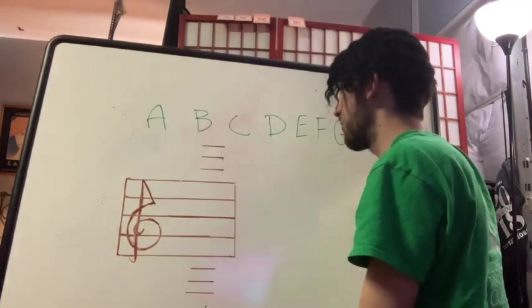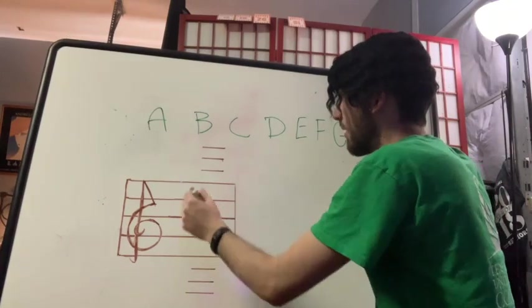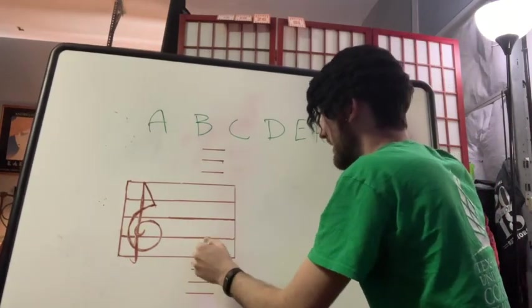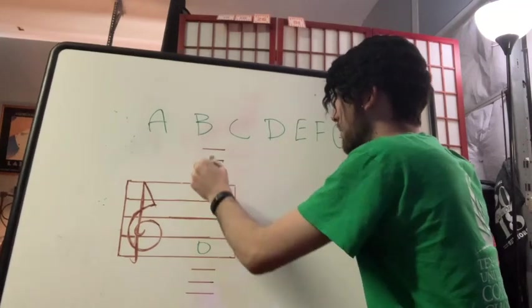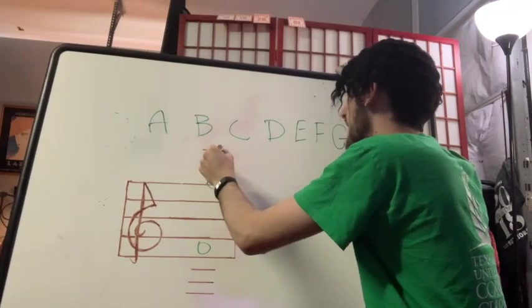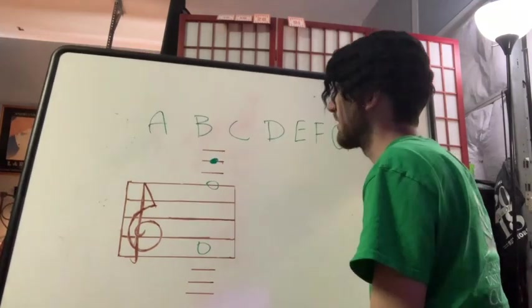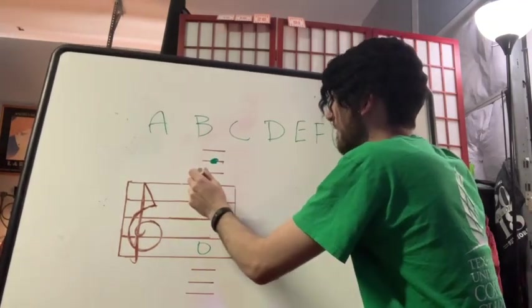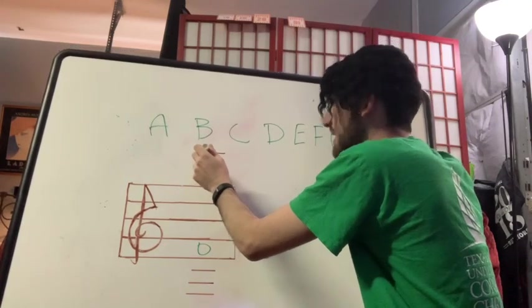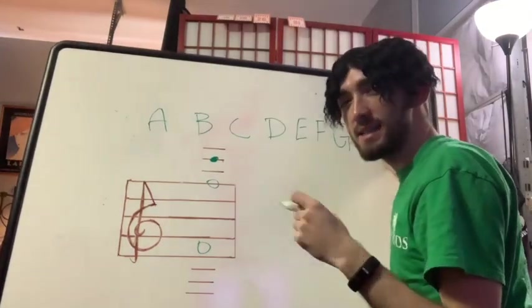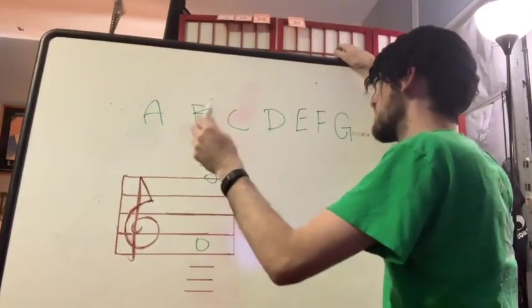So if we were to start on F instead, we could go up from this F to this F and count up, say if we had a note on this ledger line. We could say, well, I know that this is F and we could go G, A, B, C, but that takes a little bit too long to read in my opinion.